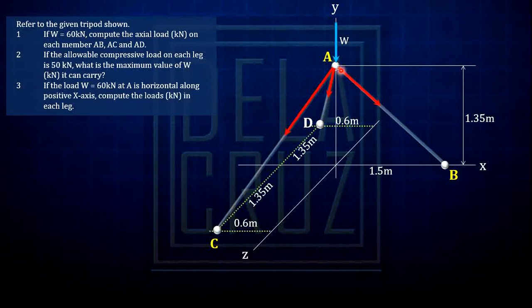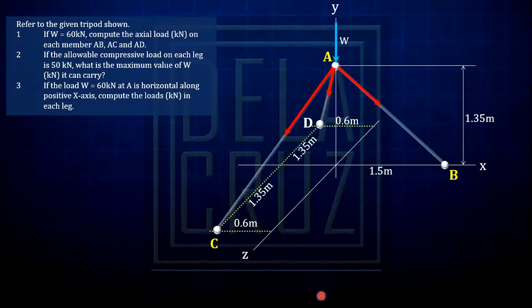Assuming all members are in tension — that assumption means forces are directed away from the point. So we are analyzing this by the method of joints at point A, just like a truss. In method of joints, we use summation of forces — but here it is obviously 3-dimensional, so we can use 3 equations: summation of forces along X, along Y, and along Z. But we will not do the manual calculation — we will use a calculator technique.